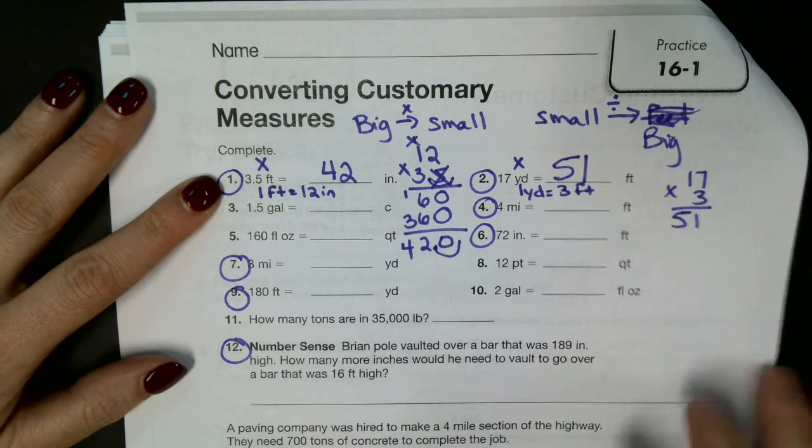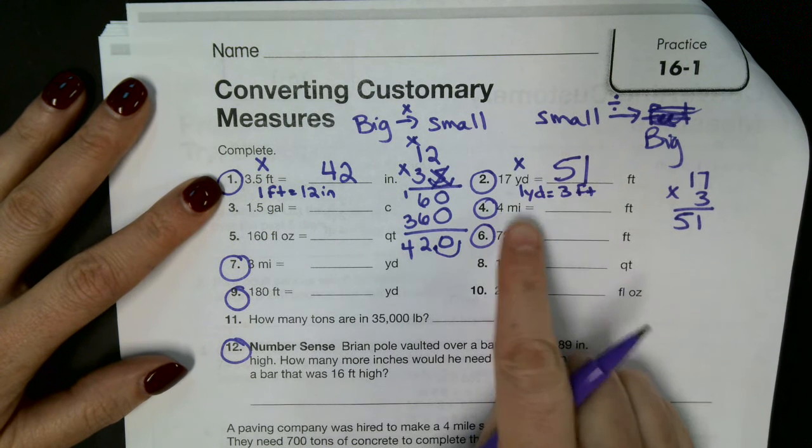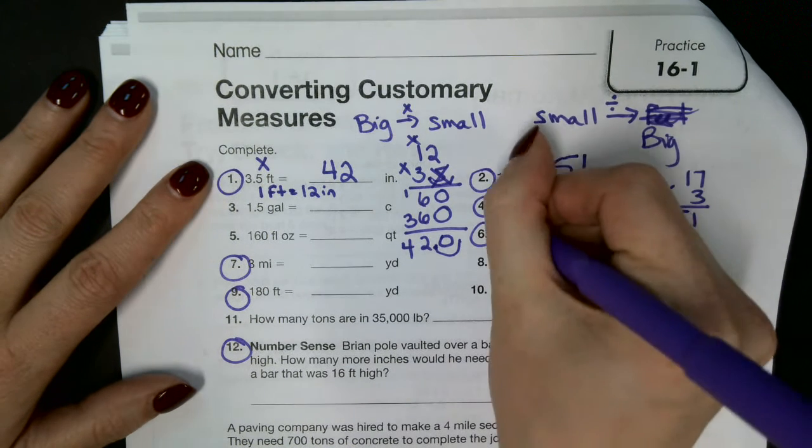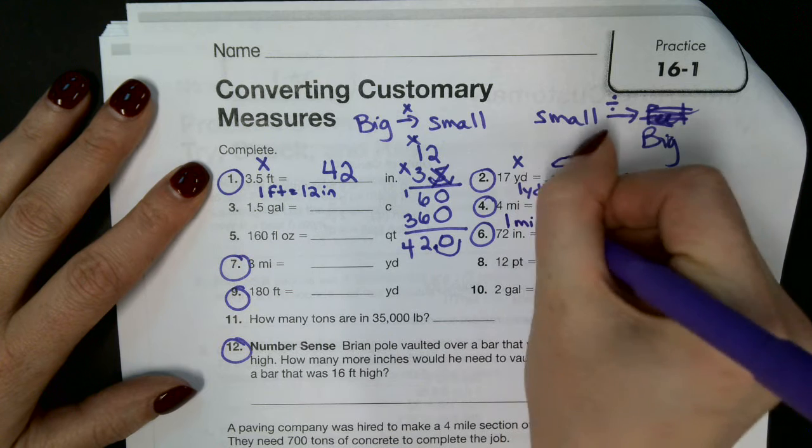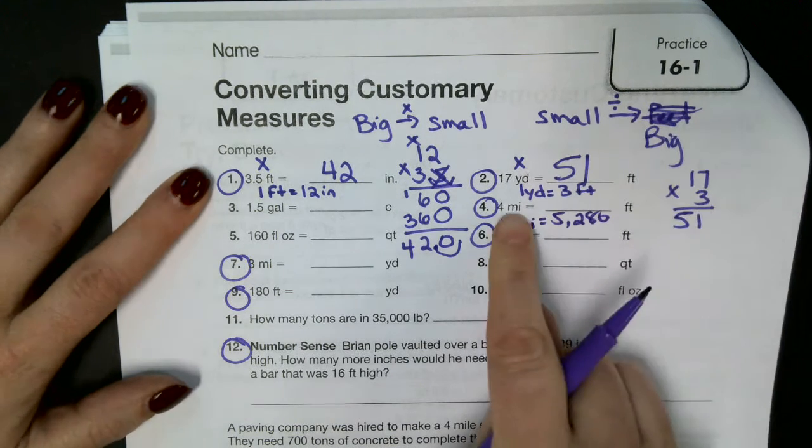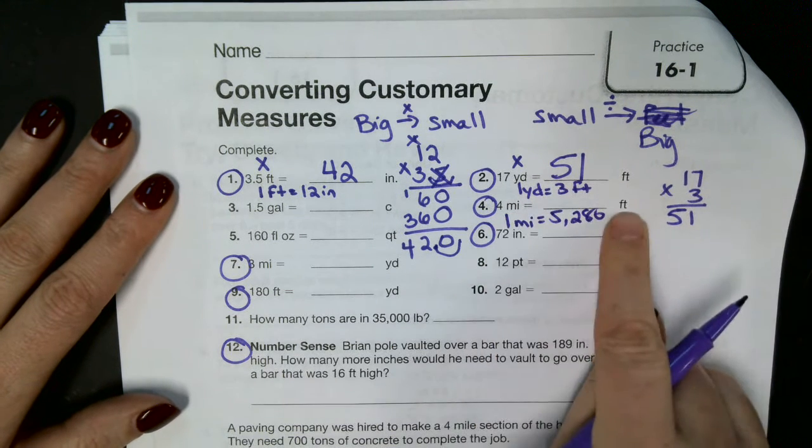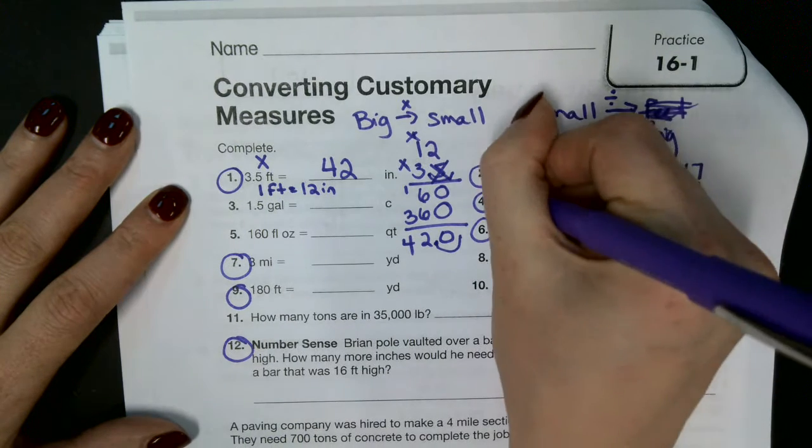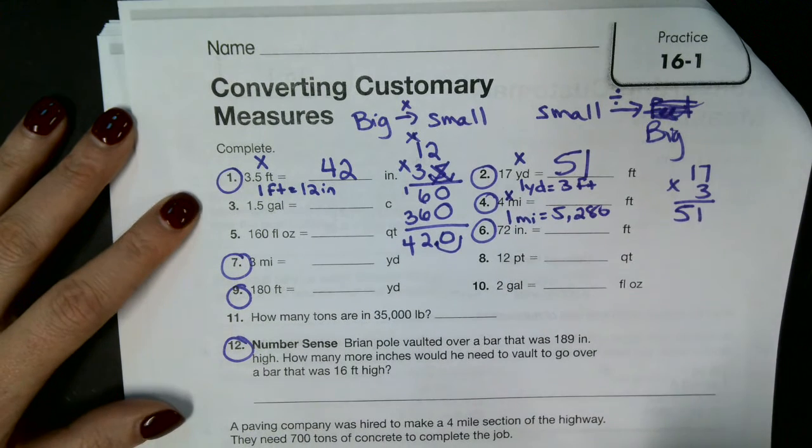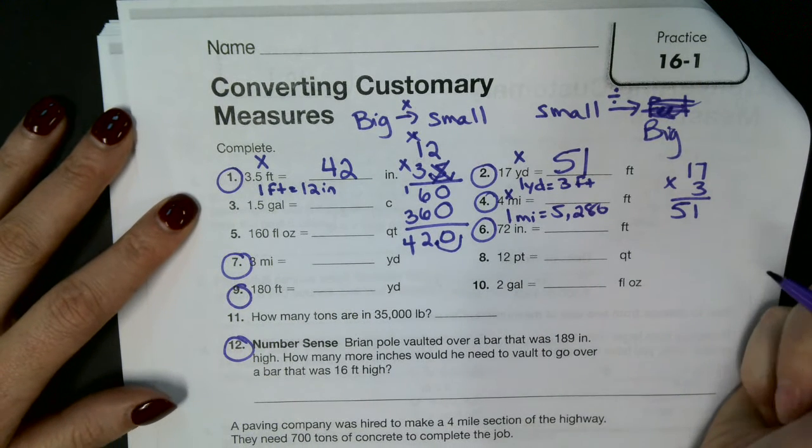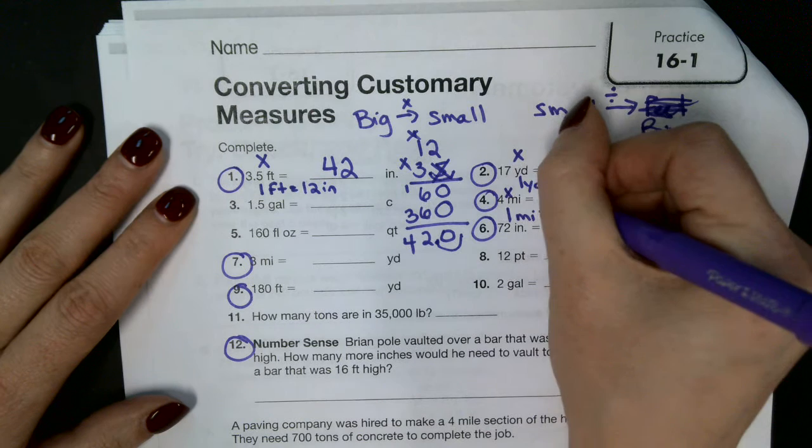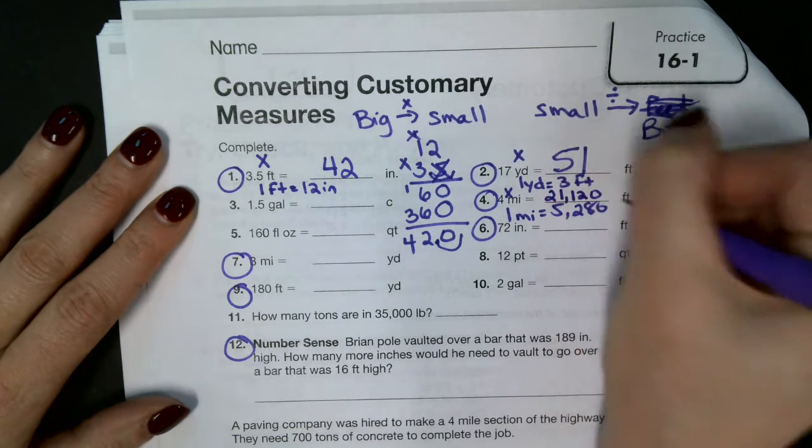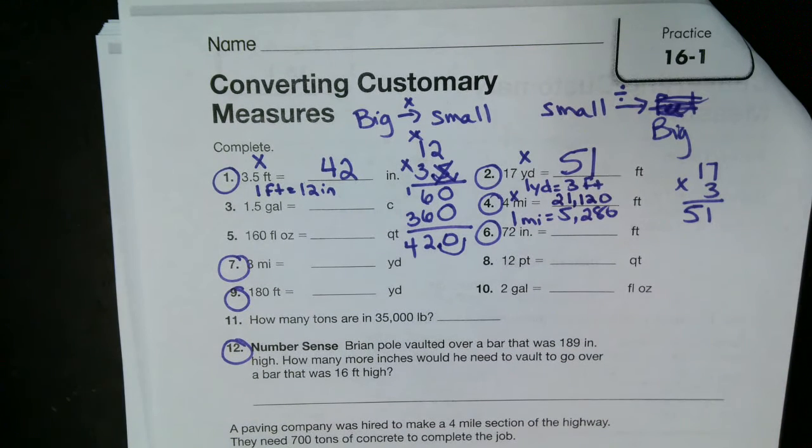Number four. So for number four, we know how many feet are in a mile? 5,280. Which one's bigger? Miles or feet? Miles. That's right. We're going to multiply. So what's 5,280 times four? 41,120. Is that right? Yes.